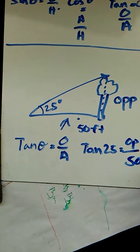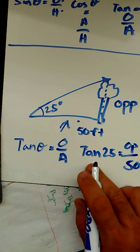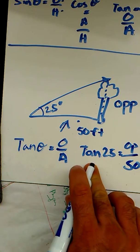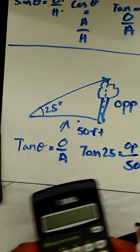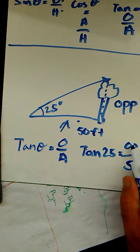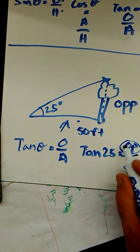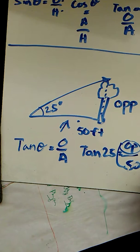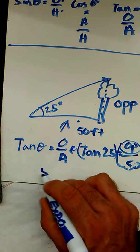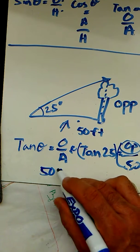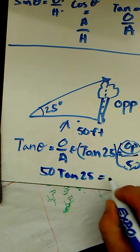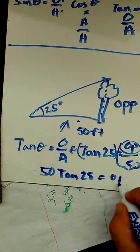So in the calculator, if you find out what the tangent of 25 is, you can apply that to it. So let's actually do the algebra first. To get the opposite side by itself, a little bit of algebra tells you that you multiply both sides by 50. So 50 times the tangent of 25 equals the opposite side.